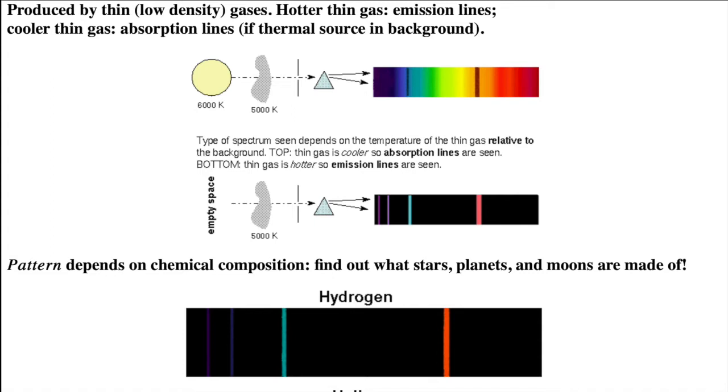If the thin, low-density gas cloud is cooler than a continuous spectrum source, a hot dense object in the background, you'll see absorption lines because the thin, cool gas cloud is absorbing certain specific wavelengths of light that were produced by the hot dense object. The thin, cooler gas cloud is filtering out or blocking certain wavelengths or colors produced by the hot dense object.